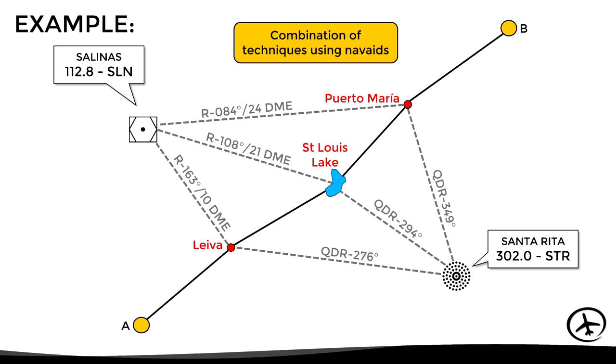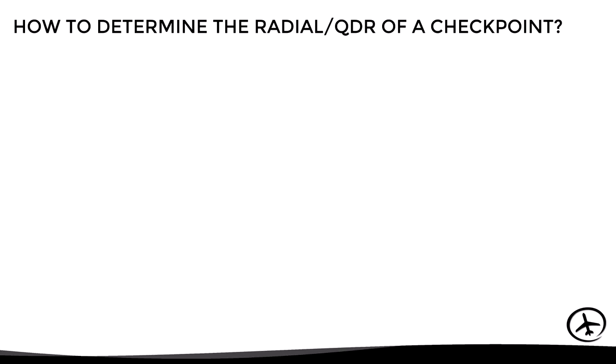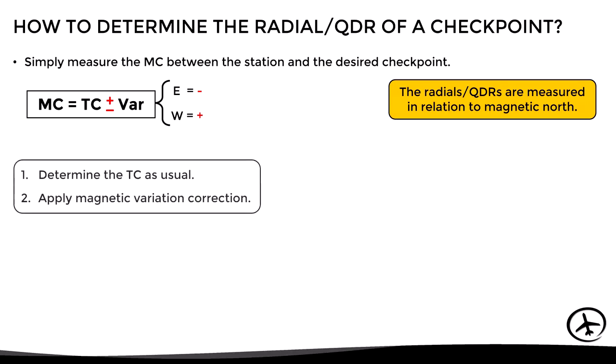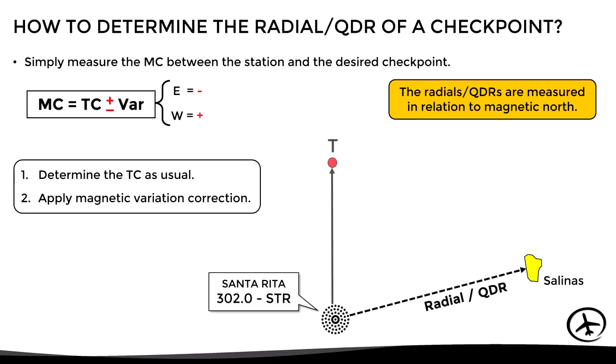Now that we know how to use these NAVAIDs in practice, let's look at how to determine the radial or QDR of a checkpoint manually using a chart and a plotter. The radials are measured in relation to magnetic north, not true north, so we have to use the magnetic course. Remember that the magnetic course is equal to the true course plus or minus the magnetic variation of the area. If there is a west variation, we add; if there is an east variation, we subtract. The first step is to measure the true course between the NAVAID and the checkpoint using the plotter, and then apply the magnetic variation correction to obtain the magnetic course, which will be the approximate radial or QDR.